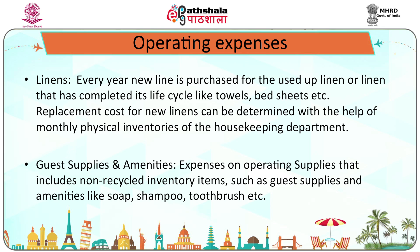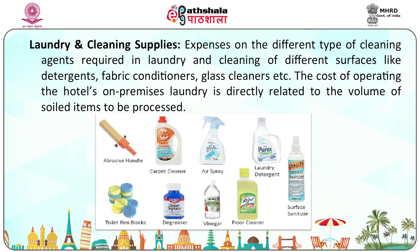Every year, new linen is purchased to replace used-up linen that has completed its life cycle, such as towels and bed sheets. Replacement cost for new linens can be determined with the help of monthly physical inventories of the housekeeping department. Guest supplies and amenities cover expenses on non-recycled inventory items like soap, shampoo, and toothbrush. Laundry and cleaning supplies include expenses on cleaning agents required for laundry and different surfaces, such as detergents, fabric conditioners, and glass cleaners, with cost directly related to the volume of soiled items processed.